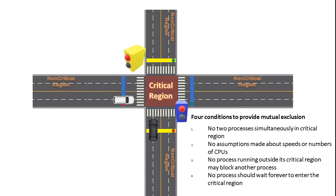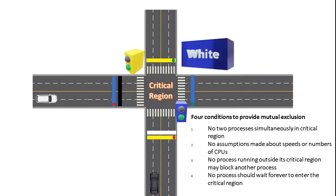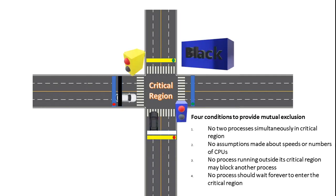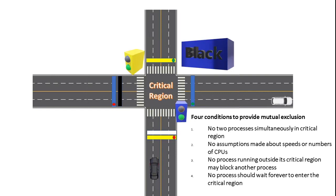To solve this, we add a board. If the traffic lights are both red, the board allows one of the cars to enter the critical region. This solves the problem for mutual exclusion. This is Peterson's solution.